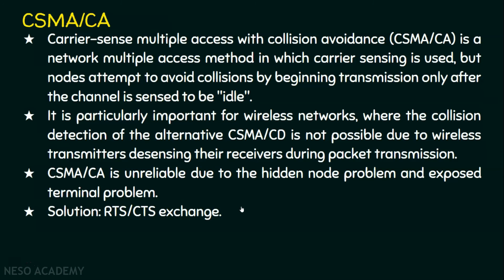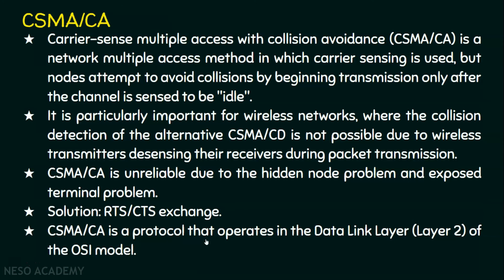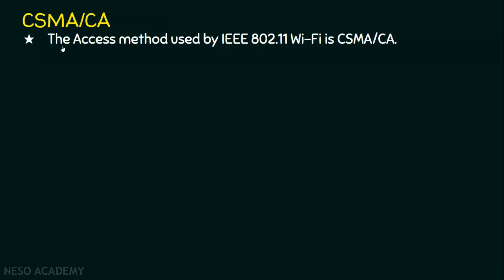CSMA/CD operates at the data link layer — specifically at the MAC sublayer of the data link layer. Similarly, CSMA/CA is a protocol that operates at the data link layer, layer two of the OSI model. CSMA/CD is used by the most popular wired LAN technology, Ethernet. CSMA/CA is used by the widely used wireless LAN technology Wi-Fi — the access method used by IEEE 802.11 Wi-Fi is CSMA/CA.